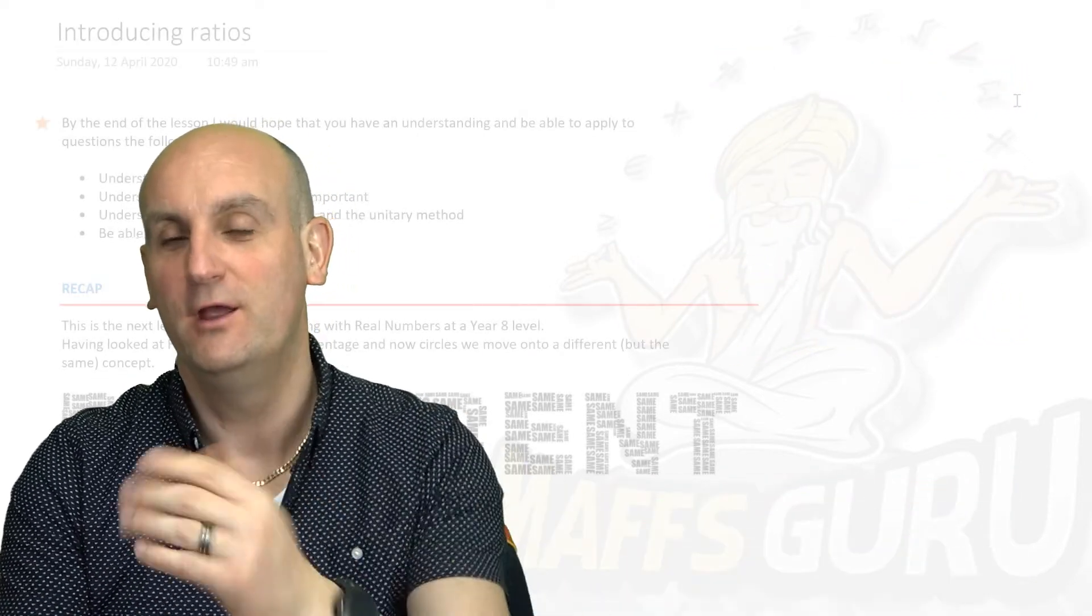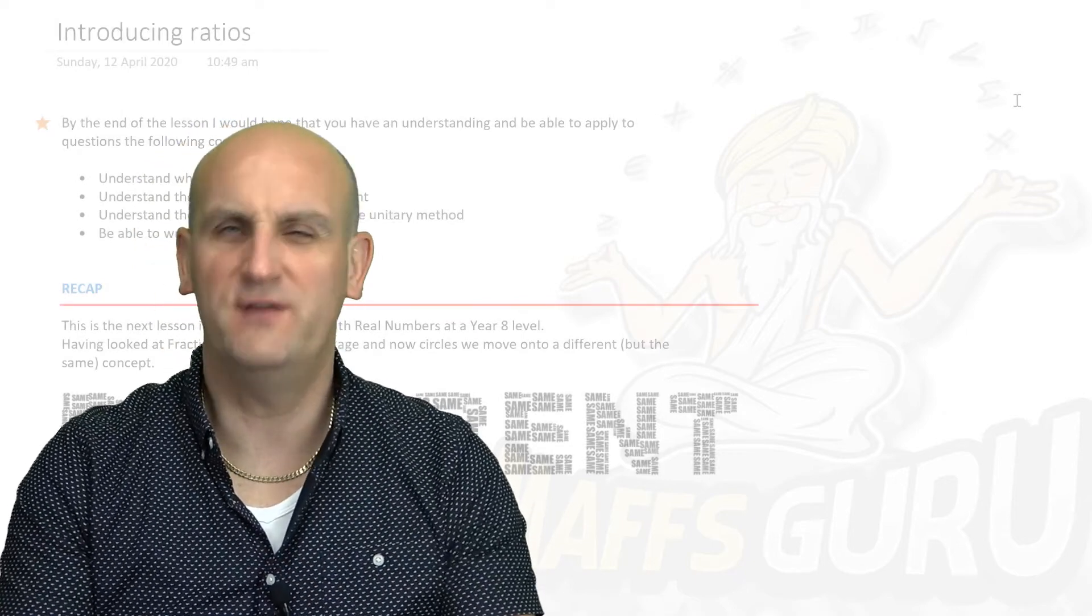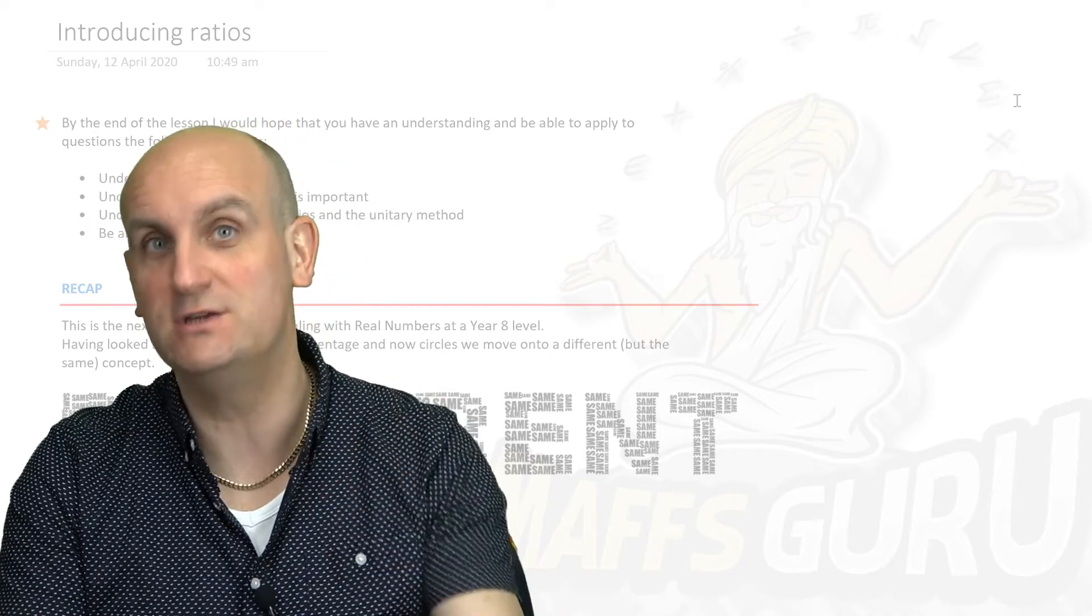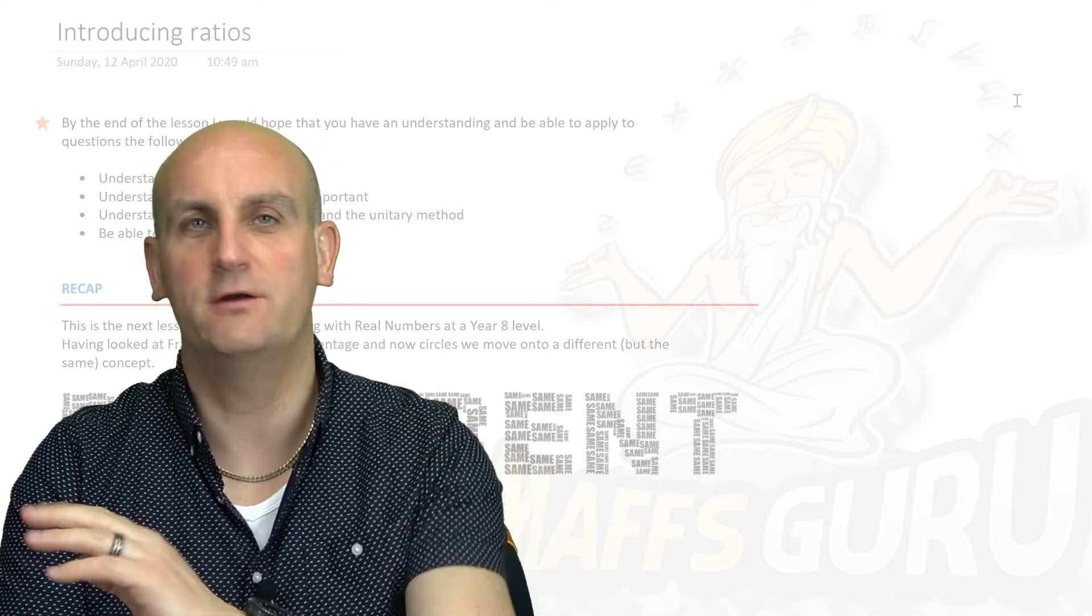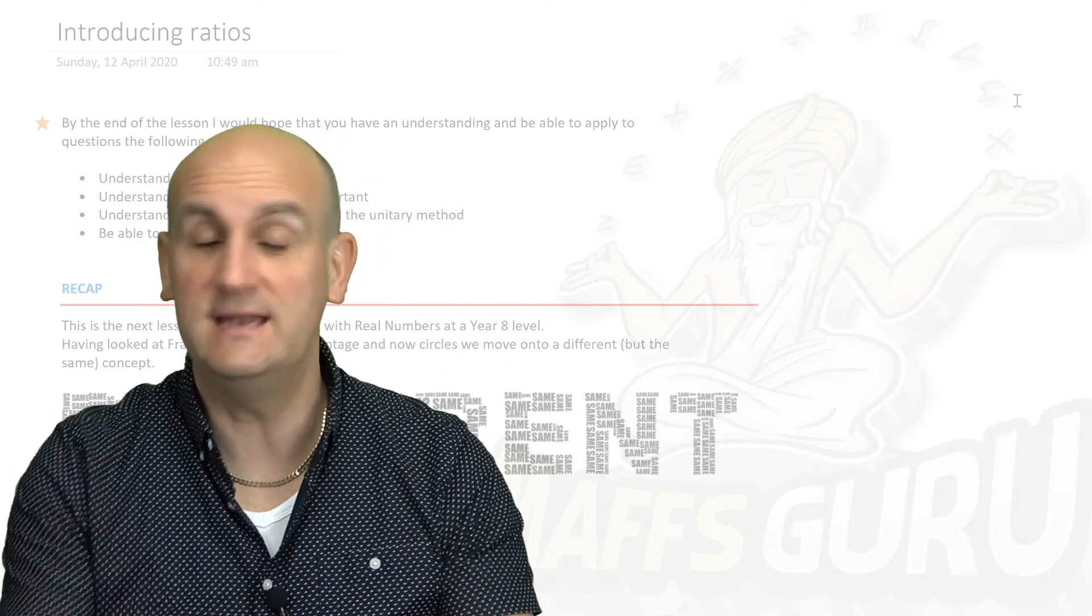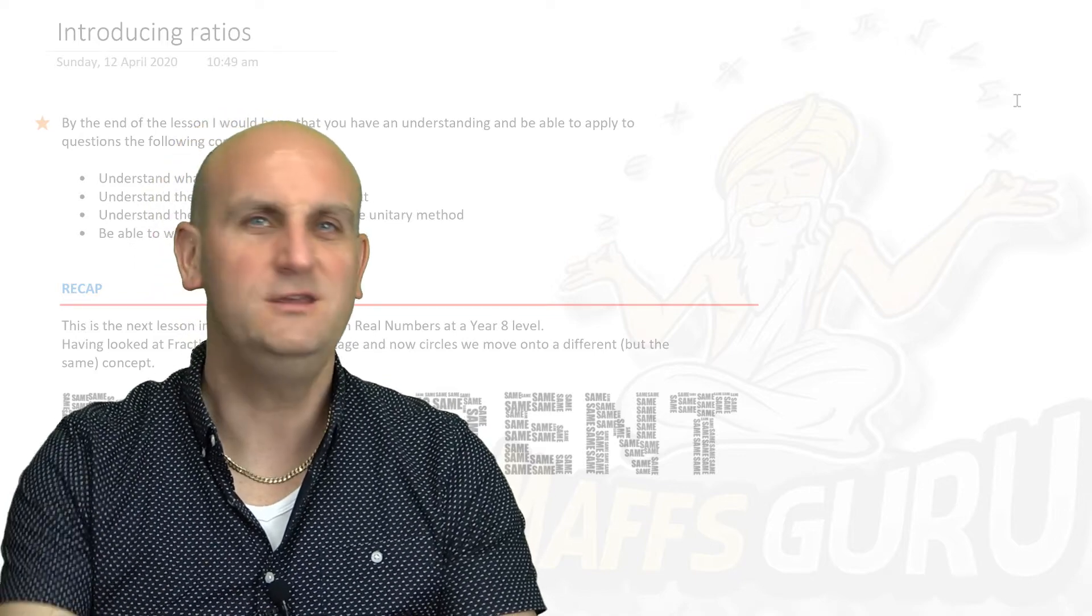Now by the end of this you're going to know that actually a lot of the work you've already done with the unitary method is very similar to what you're about to do in ratios. The key to ratios is making sure that you write them in the correct order, do a colon between them, and that's basically it for mathematics. It's a bit of multiplying, a bit of times tables, but you've got this.